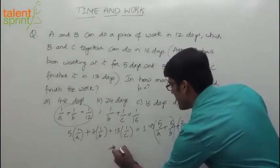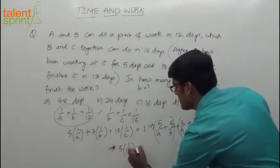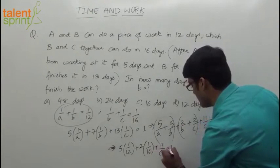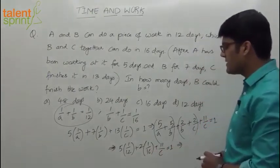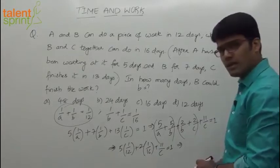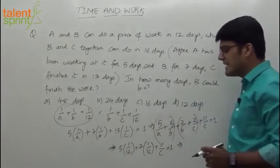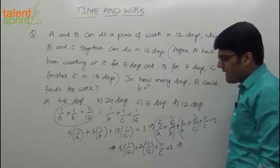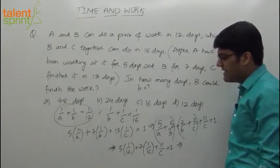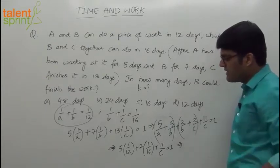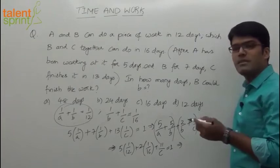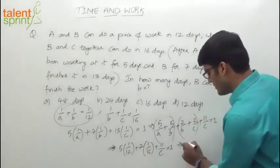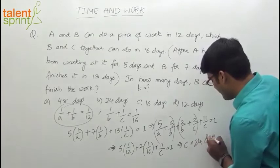So let's simplify now. If you take 5 common, 1 by A plus 1 by B is 1 by 12 plus 2 common, so 1 by B plus 1 by C is 1 by 16 plus 11 by C equals to 1. Now simplify this: 5 by 12 plus 2 by 16. 5 by 12 plus 2 by 16, simplify that. 48 is the LCM, so this goes 4 times, so 20, and this goes 3 times, so 6. 26 by 48. 1 minus 26 by 48 is 22 by 48. So 11 by C equals to 22 by 48. 11 gets cancelled, 2 times. So 1 by C equals to 2 by 48 or C equals to 24. So from this we get C equals to 24. So we can say that C takes 24 days.